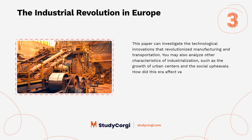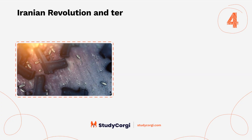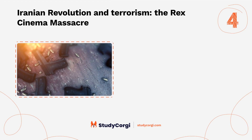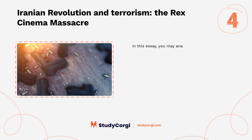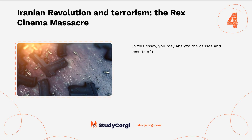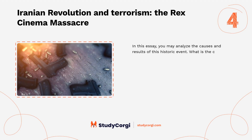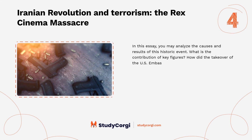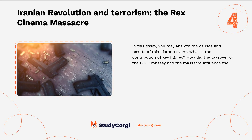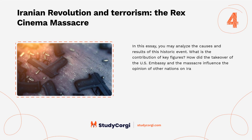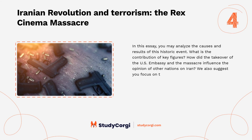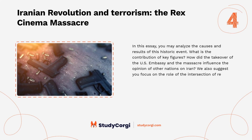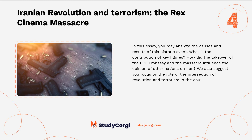Iranian Revolution and terrorism: the Rex Cinema Massacre. In this essay, you may analyze the causes and results of this historic event, and the contribution of key figures. Consider how the takeover of the U.S. embassy and the massacre influenced the opinion of other nations on Iran, and focus on the role of the intersection of revolution and terrorism in the country's history.